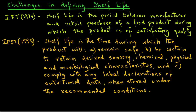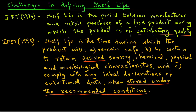In these two definitions, the terms 'satisfactory quality' and 'desired characteristics' are highly ambiguous terms that often lead to confusion when used in practice. Similarly, 'stored under the recommended conditions' does not address the thermal abuse of the product in the distribution segment of the food chain.